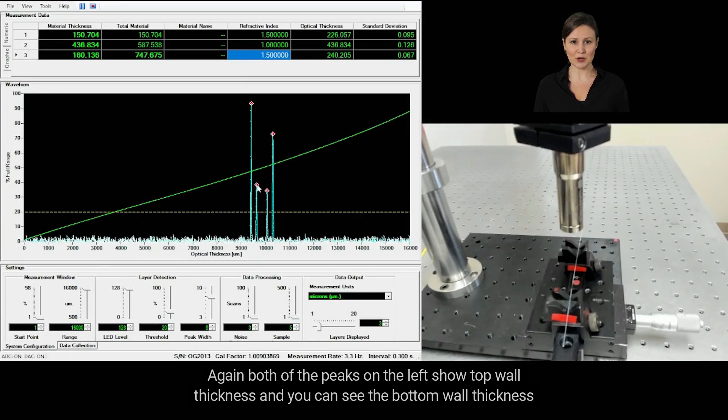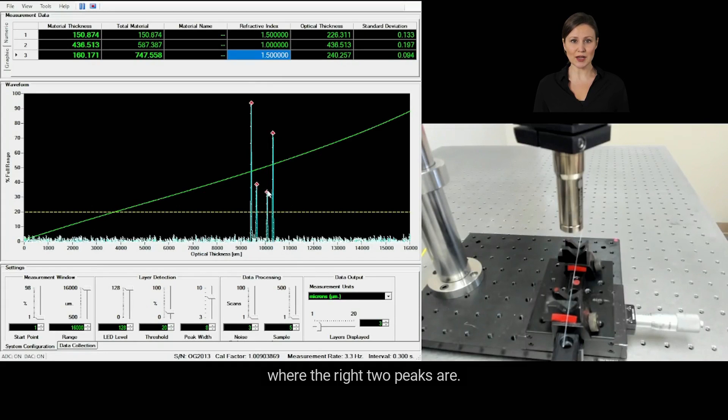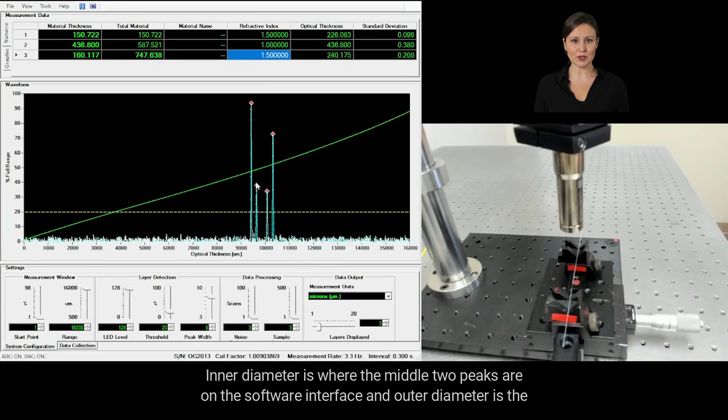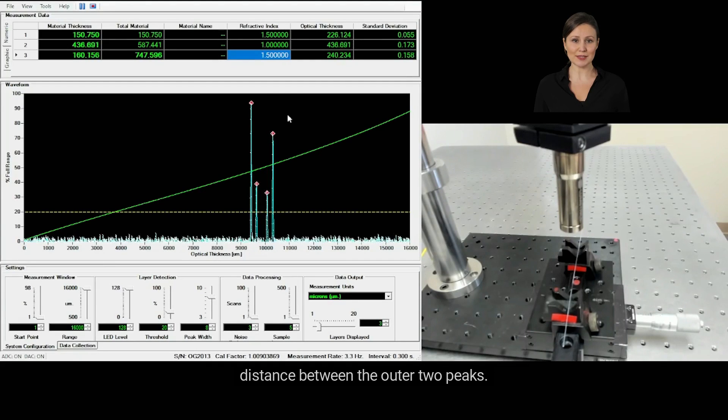Again, both of the peaks on the left show top wall thickness, and you can see the bottom wall thickness where the right two peaks are. Inner diameter is where the middle two peaks are on the software interface, and outer diameter is the distance between the outer two peaks.